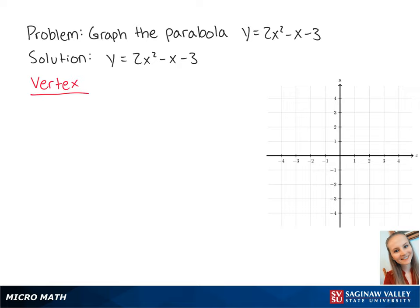If we use the vertex formula, we get x equals 1 over 2 times 2, which is equal to 1 fourth. If we plug 1 fourth into the original equation, we get y equals 2 times 1 fourth squared minus 1 fourth minus 3, which is equal to negative 25 over 8, which is about negative 3.1.